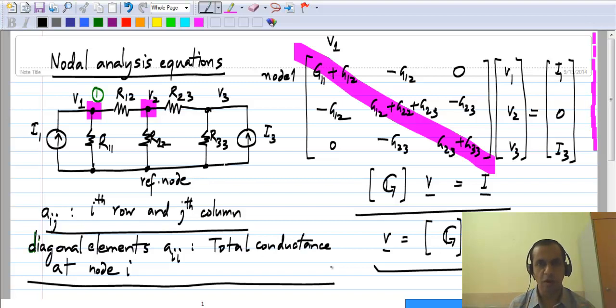Now, if you look at the off-diagonal elements, this is element A12. So if you look at element A12, what is that? We have node 1 over here and node 2 over there, and we have a resistance R12 connected between them, the conductance of that is G12. So basically the element A12 of the matrix is nothing but the negative of the conductance connected between node 1 and node 2.